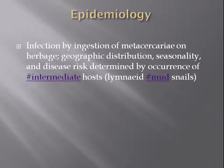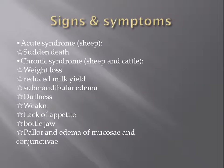Now we will discuss the epidemiology of this disease. Infection occurs by the ingestion of metacercaria on herbage. Geographic distribution, seasonality, and disease risk are determined by the occurrence of the intermediate host, such as lymnaeid mud snails.